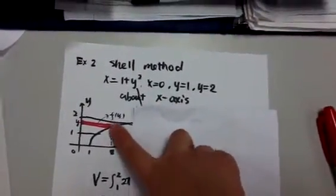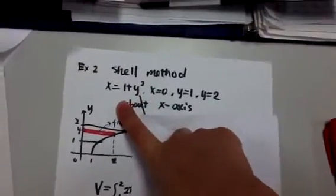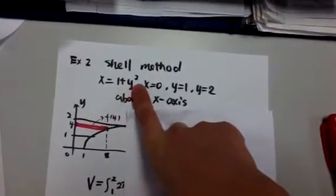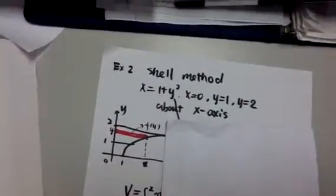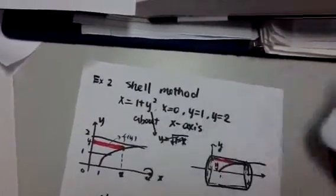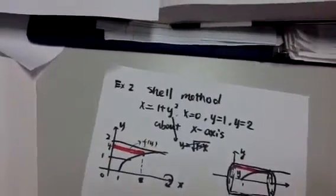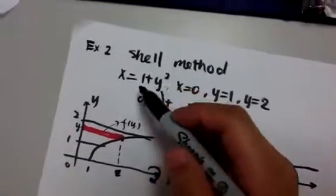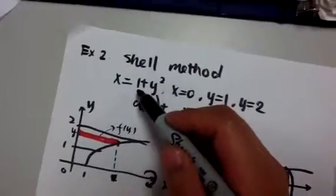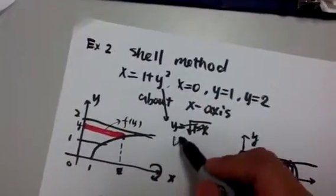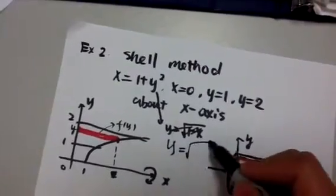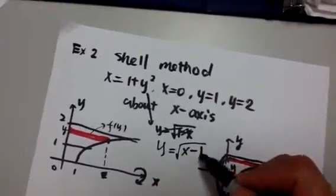Now I have to graph this. So x equals 1 plus y squared. I always want to rewrite this like y in terms of x. So subtract 1, I will have x minus 1 equals y squared. So my y should equal square root of x subtract 1.